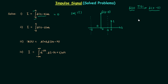Whenever you have an impulse signal, the first step is to plot the waveform and then locate the upper and lower limits. If the impulse is outside the range then the result of integration is 0, and if the impulse lies within the range then the result equals the weight of the impulse, or simply the area of the impulse.